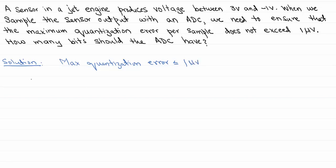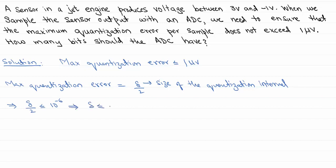Now in the case of uniform quantization, we know that max quantization error is given by delta by 2, where delta is the size of the quantization interval. So what this means is we are asking that delta by 2 is less than or equal to 10 to the minus 6, which means delta is less than or equal to 2 times 10 to the minus 6.